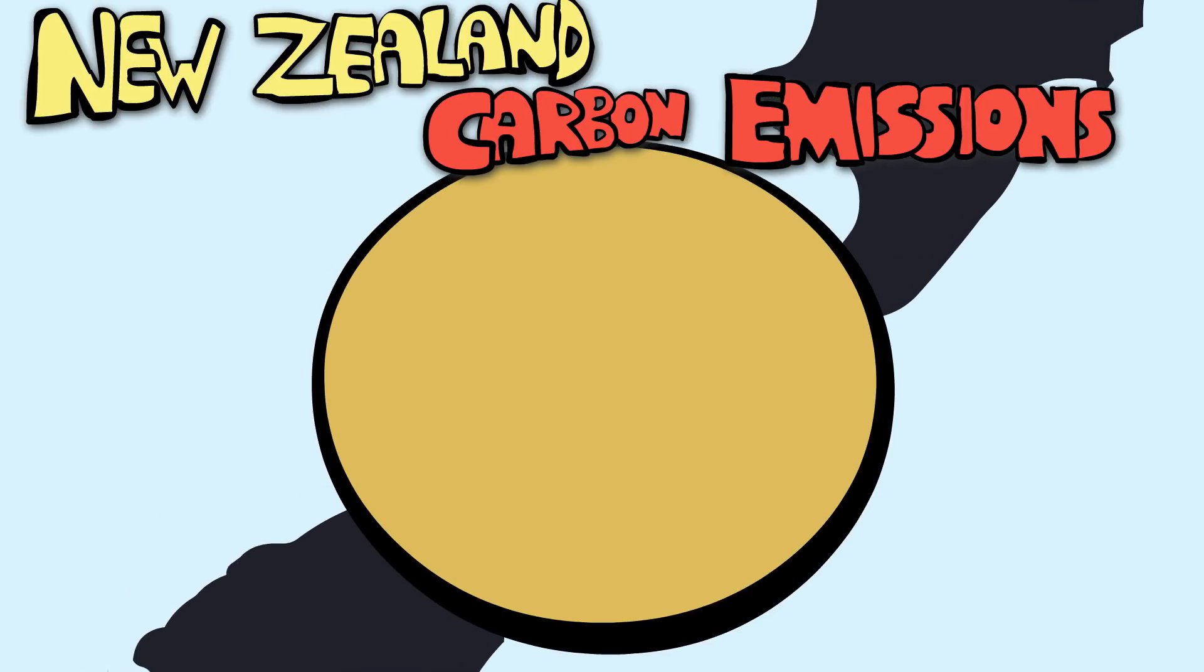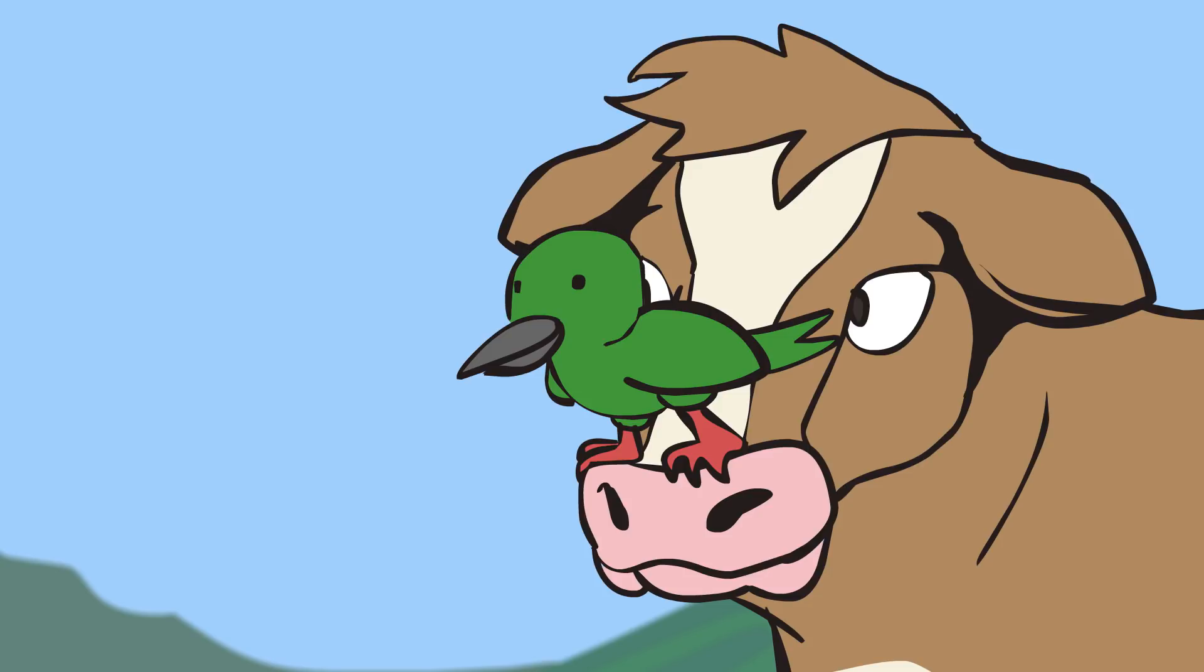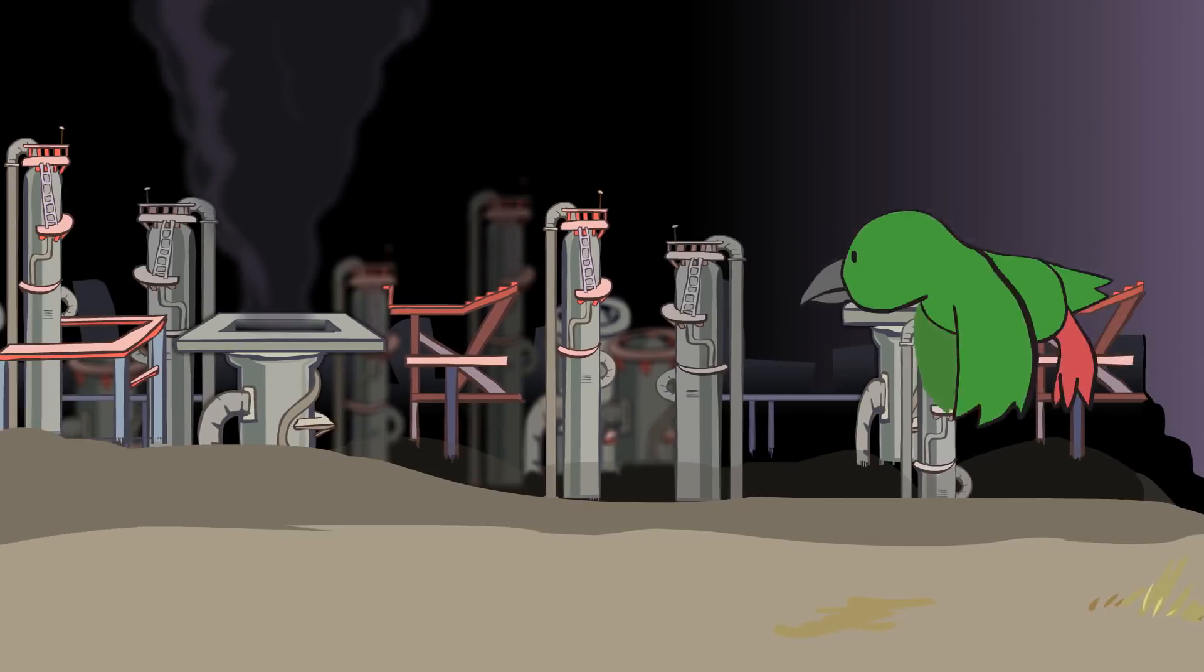Half of New Zealand's carbon emissions come from livestock, most of which is methane. How is it that livestock can produce so much greenhouse gas? And is it really as bad as coal and oil?